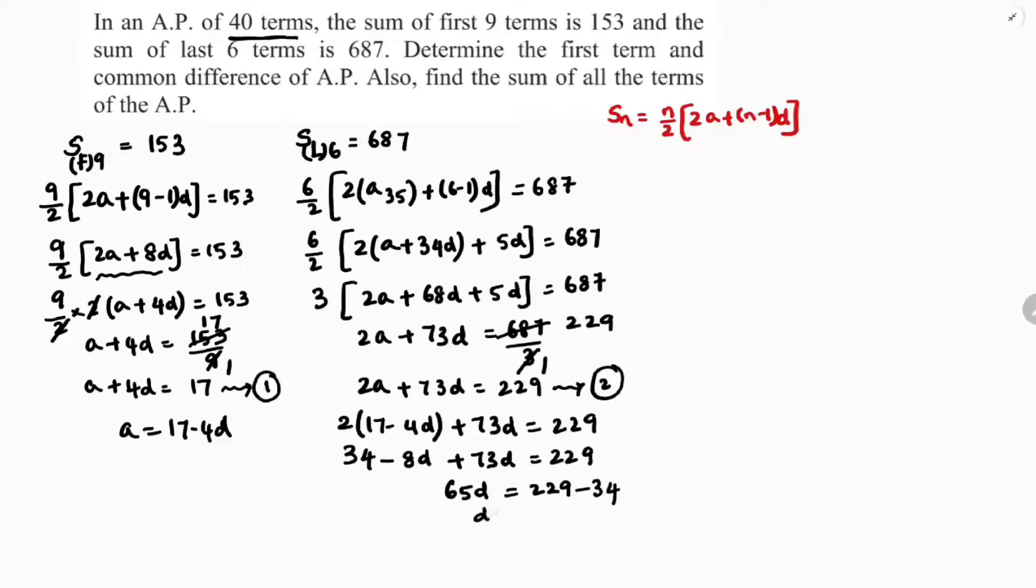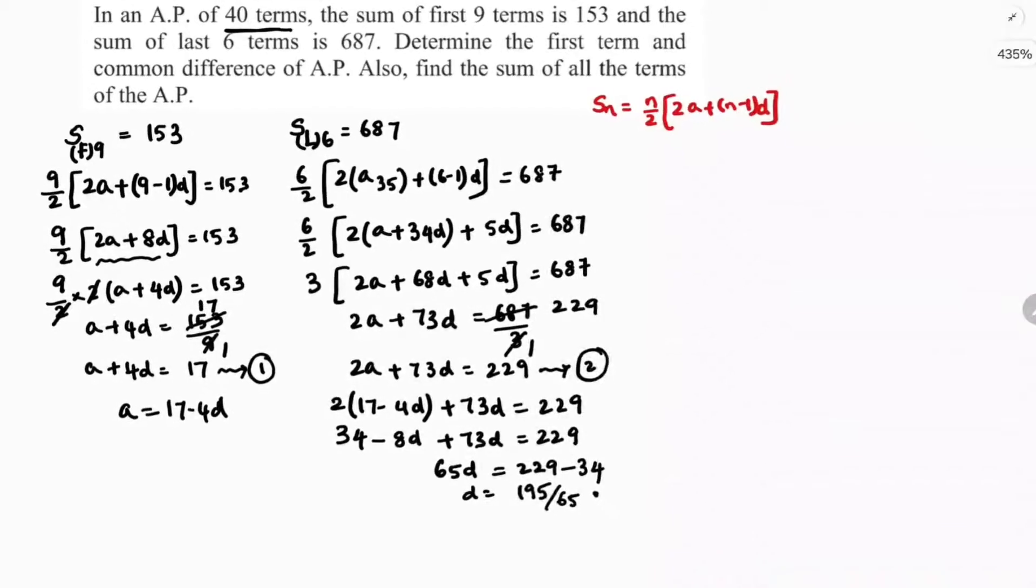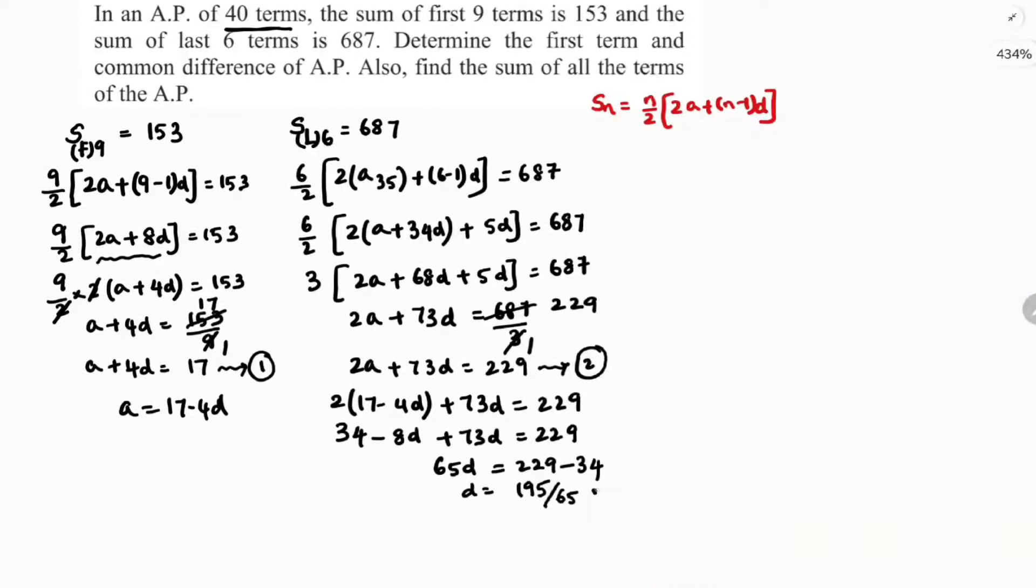D equals 229 minus 34, 195 by 65. 195 by 65 is 3. So the value of D is 3.